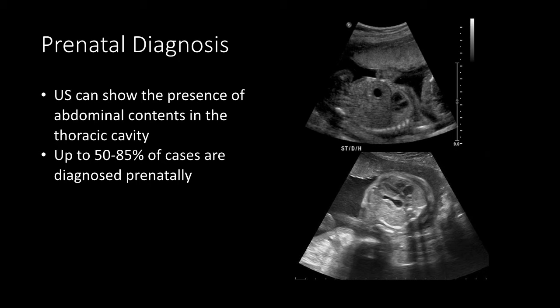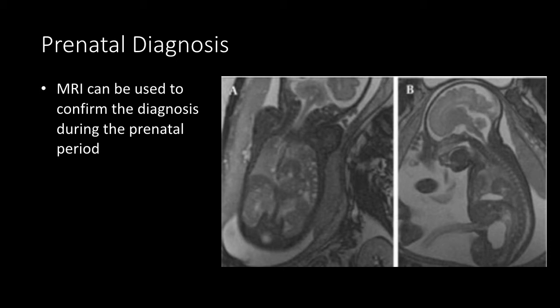In the lower picture, you can see in a transverse view a gastric bubble right next to a heart. That would be a diagnosis of congenital diaphragmatic hernia in the prenatal period. If the picture is unclear, MRI may be used for confirming the diagnosis or for fully characterizing what's going on in the fetus.